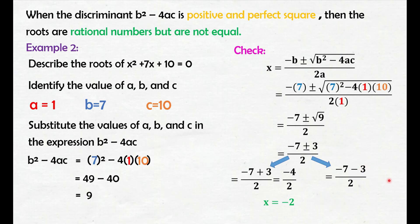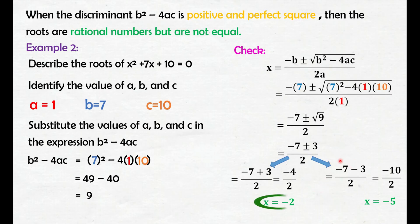Yung isa naman, negative 7 minus 3, that is negative 10. Divide natin yung negative 10 ng 2, makuha natin ay negative 5. Makikita natin dito na yung x equals negative 2 at yung x equals negative 5. Yung roots natin dito ay rational numbers pero hindi sila equal.